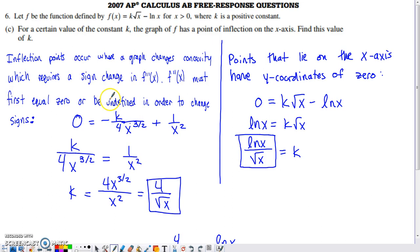An inflection point is going to happen where your graph changes concavity. A graph changes concavity when the second derivative changes signs. In order for the second derivative to change signs, the second derivative must first equal zero or be undefined.